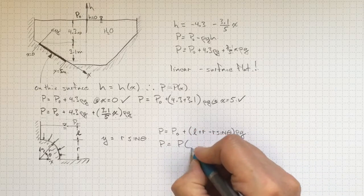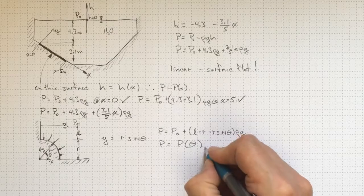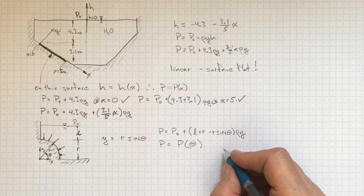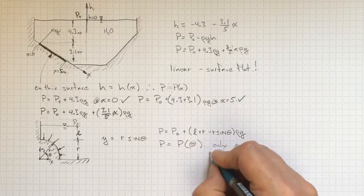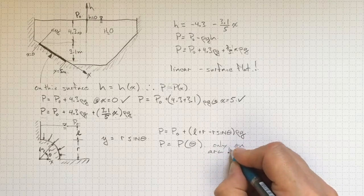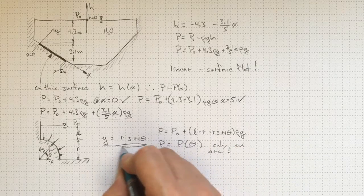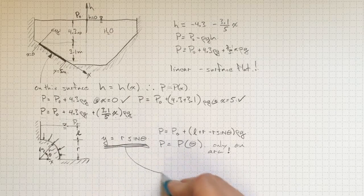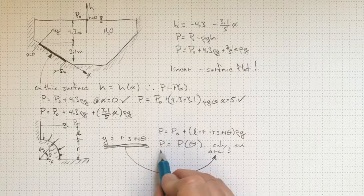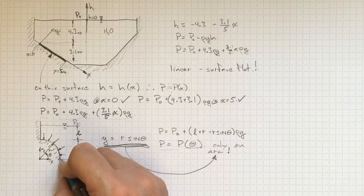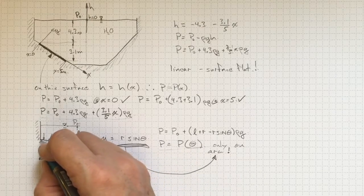So now we've got p as a function of theta alone because we chose our coordinate system wisely. And only on the arc because that was where we developed this relationship here between y and theta. So as a result, we've now got our pressure as a function of theta and we can integrate over this entire surface.